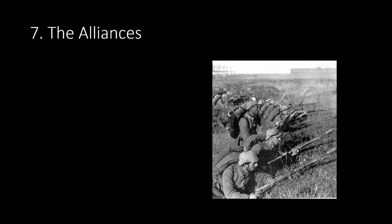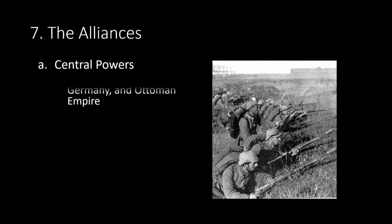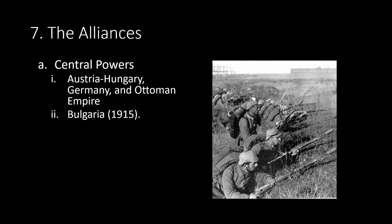The Central Powers consisted of Austria-Hungary, Germany, and the Ottoman Empire. The name 'Triple Alliance' was dropped due to Italy leaving the alliance, and these powers were centrally located. Bulgaria would then join, hoping to gain some territory out of Serbia.